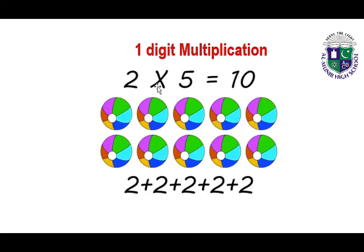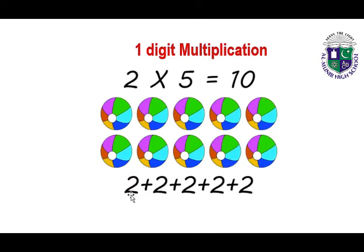Here we have balls and the question is two multiply by five, so it means we have to add two balls five times. You can see the first pair of balls, second pair, third pair, fourth pair, and the fifth pair. When we add these five pairs, two, four, six, eight, ten — two multiply by five is equal to ten.